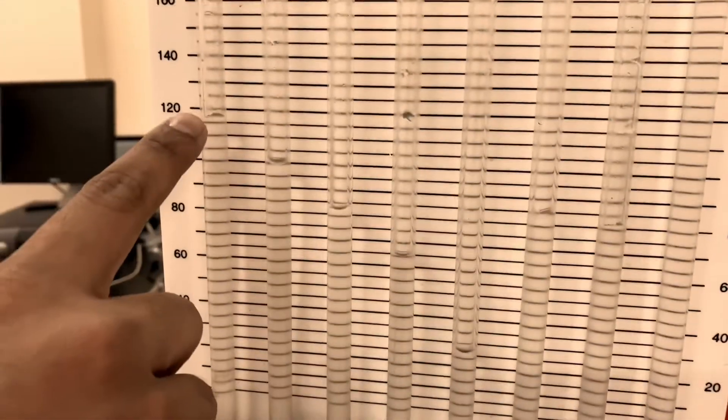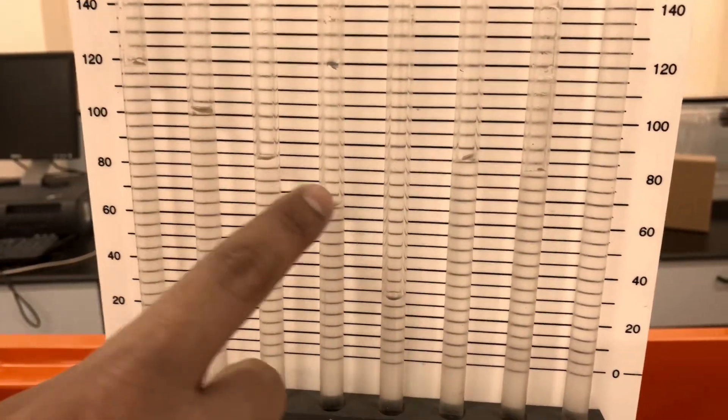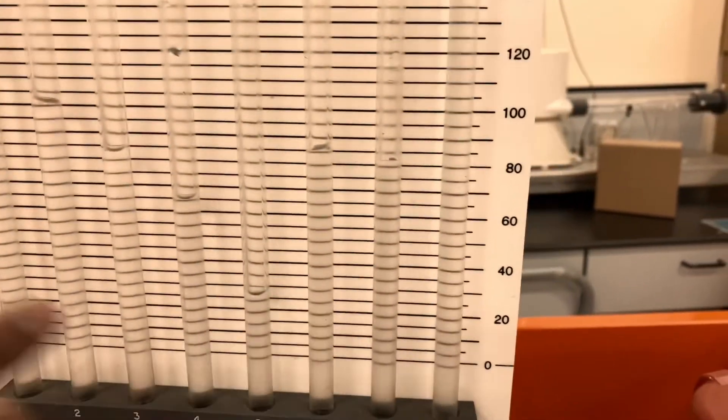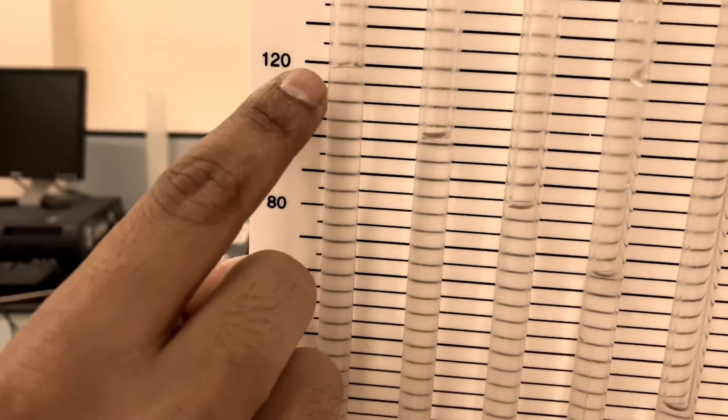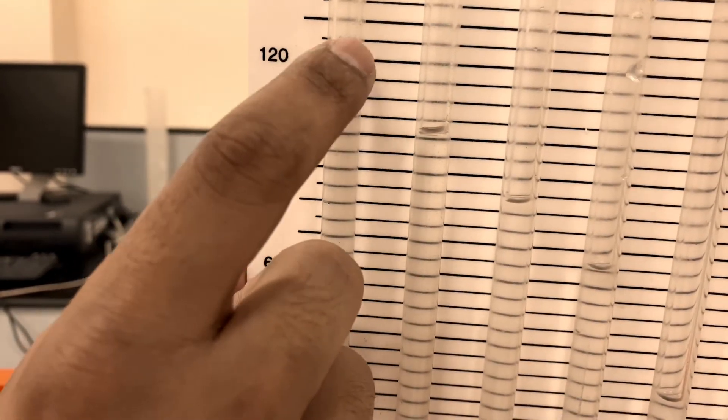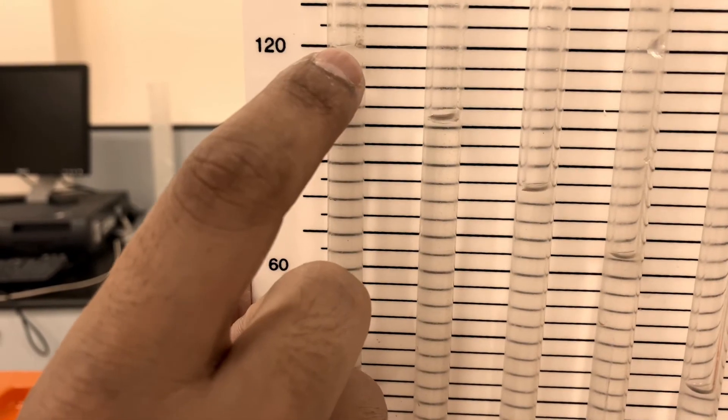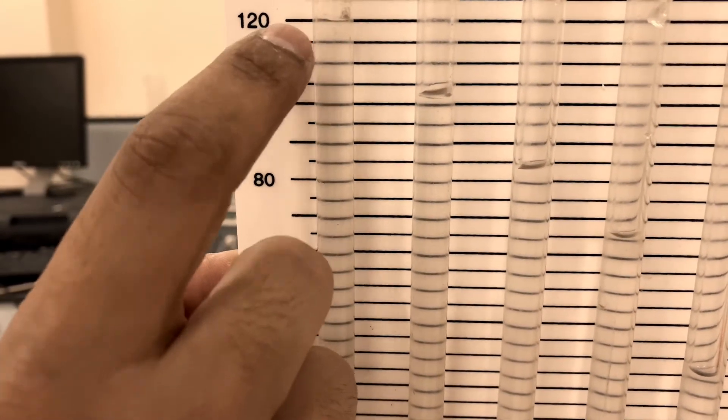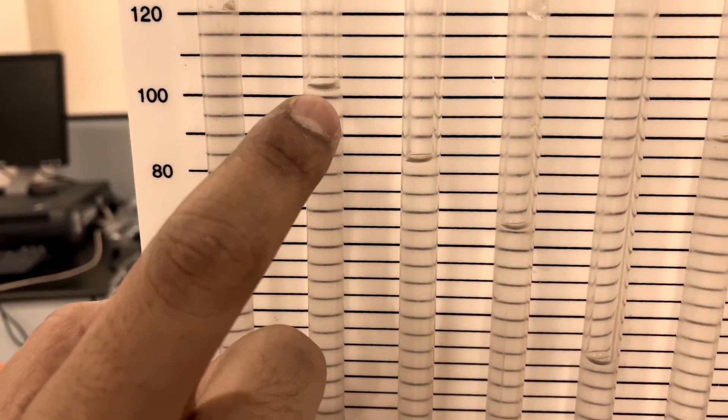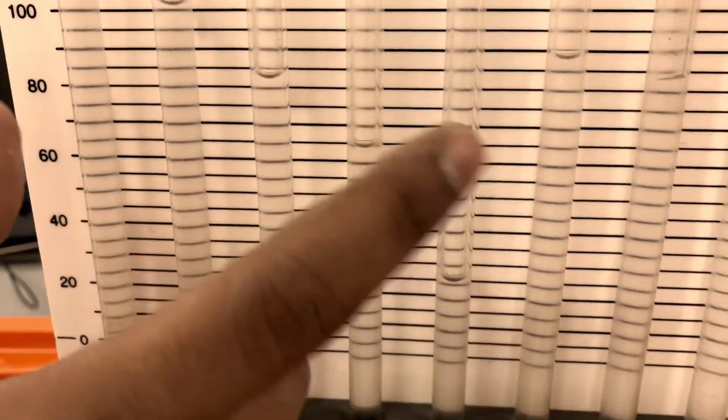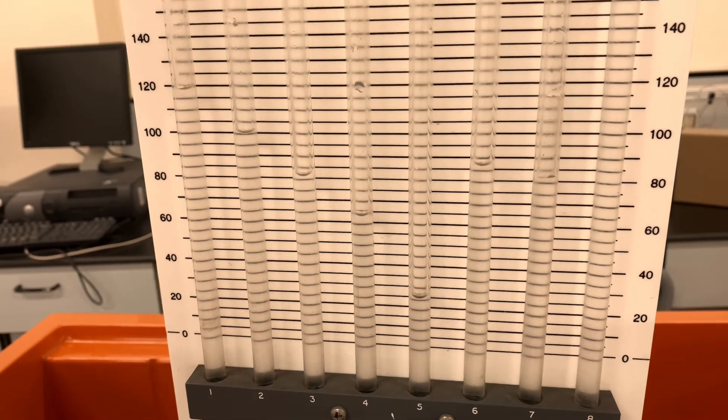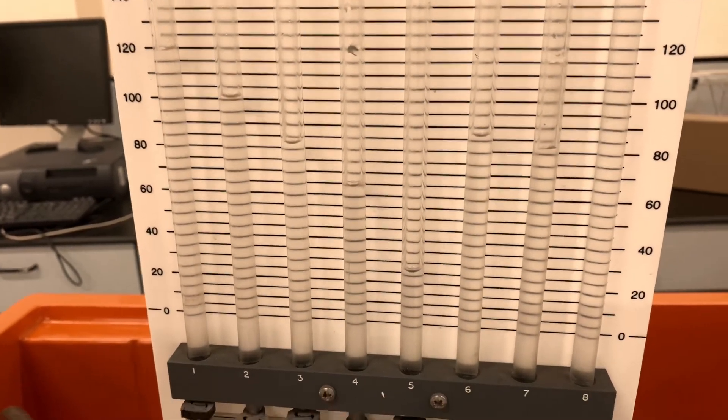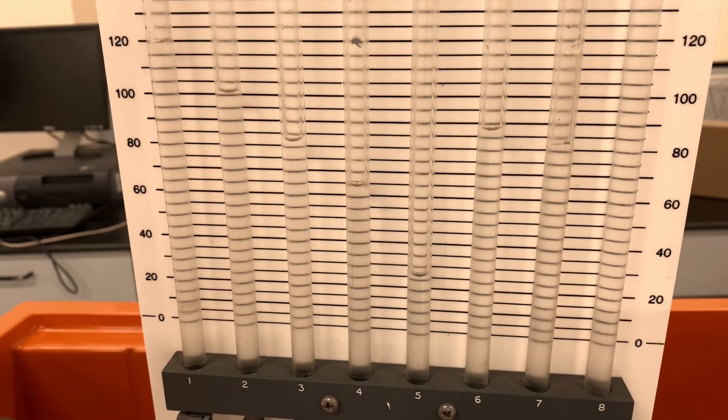As you can see, for that flow rate, there is a different reading for h1, h2, h3 up to h8. You need to take down the readings from here. Check where the lower meniscus of the liquid is. It's about 120 for this one, about 100 for this, 85, and so on. This is how you take the readings for the manometer, and you will write it down. This is how you take the readings for the tables.